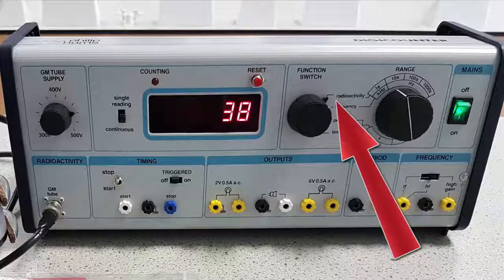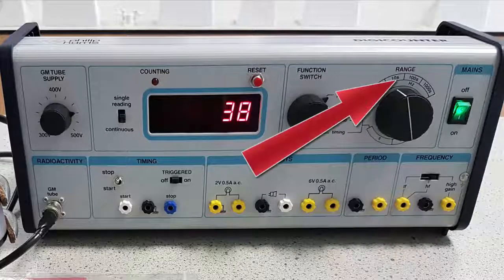The function dial needs to be set to radioactivity and the range dial next to it is set to record for 10 seconds.